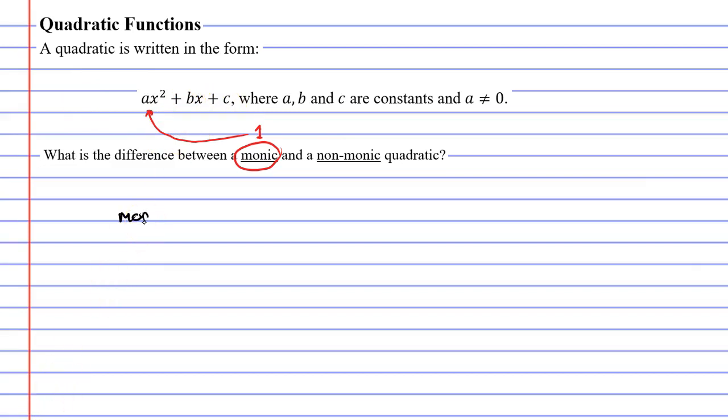So an example of a monic quadratic might be x squared minus 2x plus 5. Notice that there's no number to the left of x squared, which means it technically has the number 1, meaning that this is a monic quadratic. We love monic quadratics because they're easier to factorize, which also makes equations easier to solve.